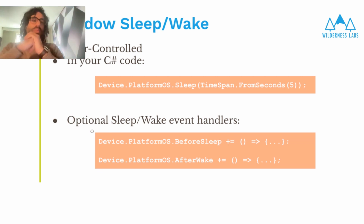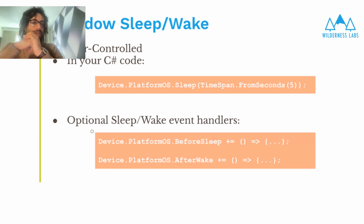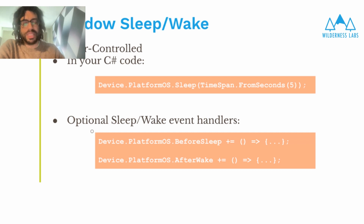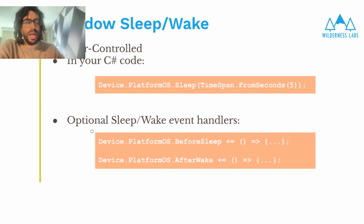Moving on from the main components of MetaOS, let's talk about some advanced features you can get through using the Meadow Core API and Meadow Core's configuration files. Starting with a very important one for embedded devices: how do you enable sleep and wake? It's very simple using the Meadow namespaces — we can use a device object to call a static method, giving it a time span in a very standard .NET way for how long to sleep. And that's it — the STM32 processor will shut down and wake up after the allotted time span.